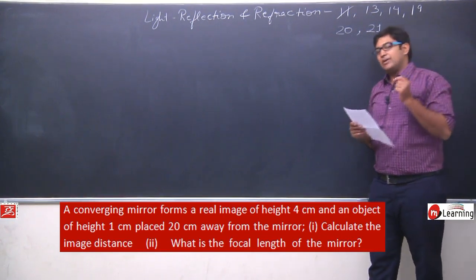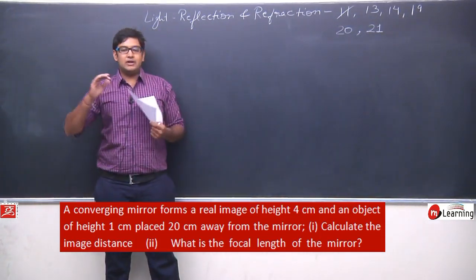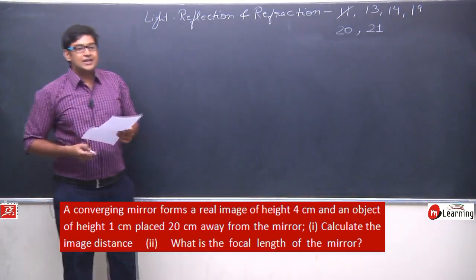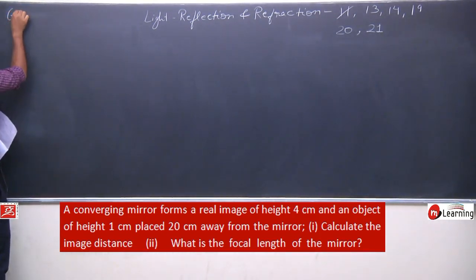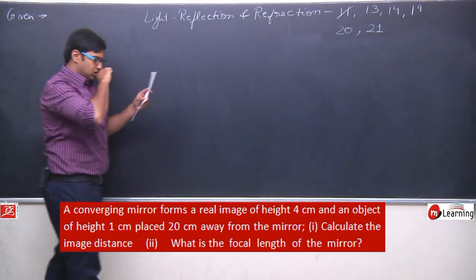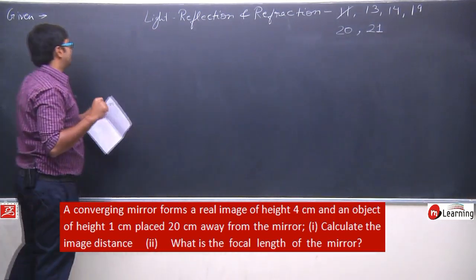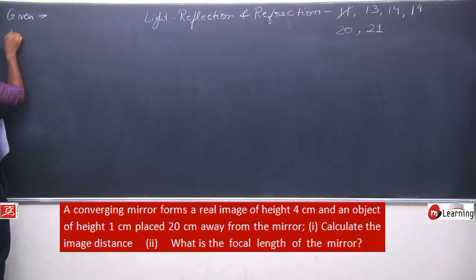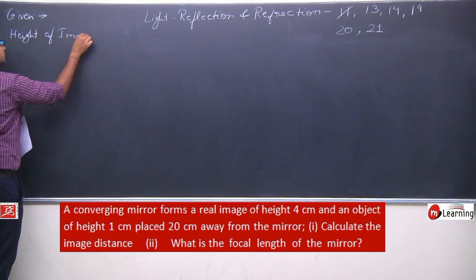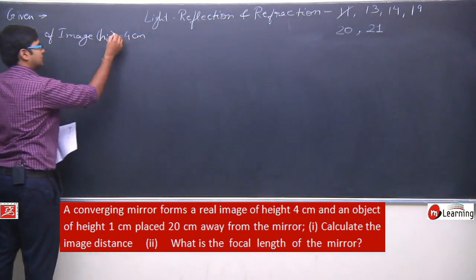This is a numerical question, so let us write the given data. The converging mirror forms a real image of height 4 centimeters. So, height of image, h_i, is equal to 4 centimeters.